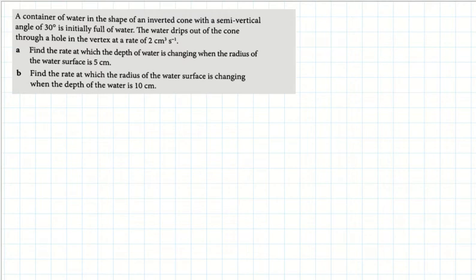A container of water in the shape of an inverted cone with a semi-vertical angle of 30 degrees is initially full of water. The water drips out of the cone through a hole in the vertex at a rate of 2 cm³ per second.